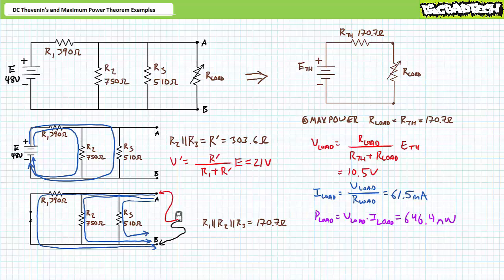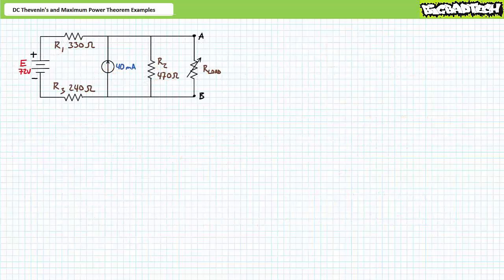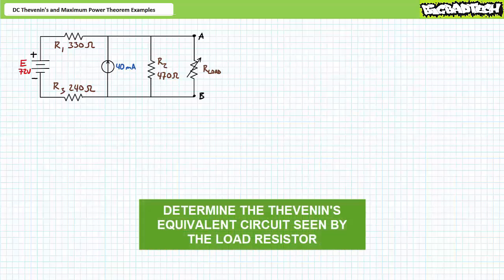All right, I believe we've accomplished our desired goals and can move on to our last illustrated example problem. Our last example features a series-parallel combination of four resistive elements and two sources: a 72-volt voltage source and a 40-milliampere current source. Stage one necessitates we solve for the Thevenin's equivalent circuit seen by the variable load resistor. Once we've got these values, we move on to stage two and examine maximum power transfer. Here's a hint: use the superposition theorem to determine the open circuit voltage. Solving for the Thevenin's equivalent resistance, however, can be done in one step.